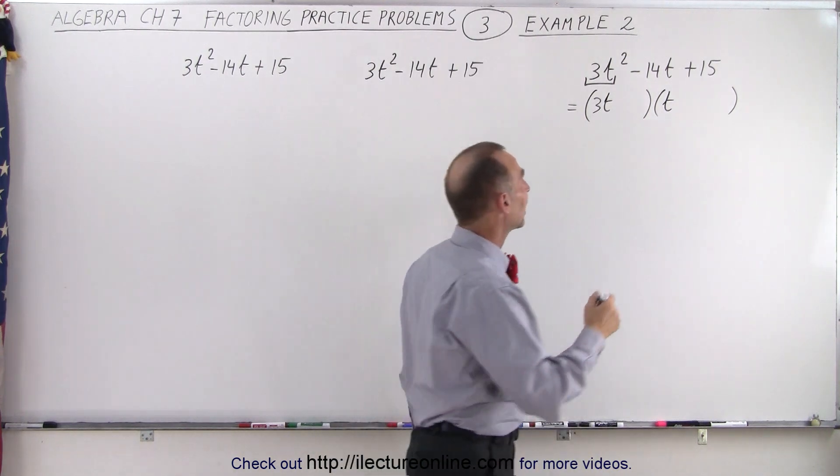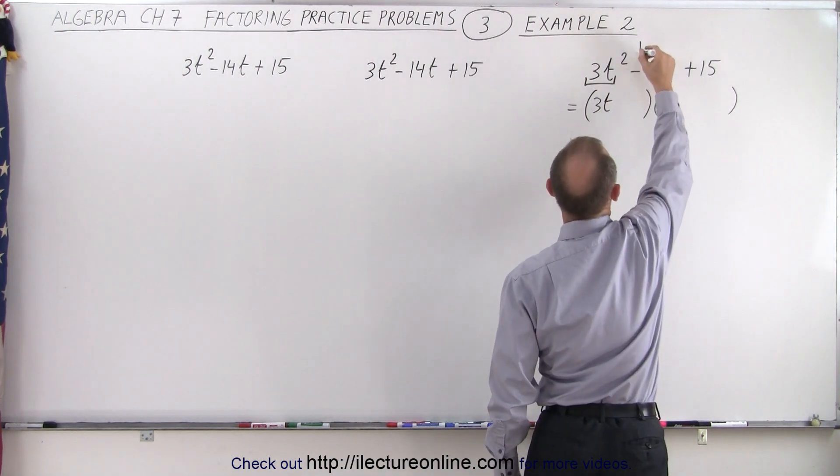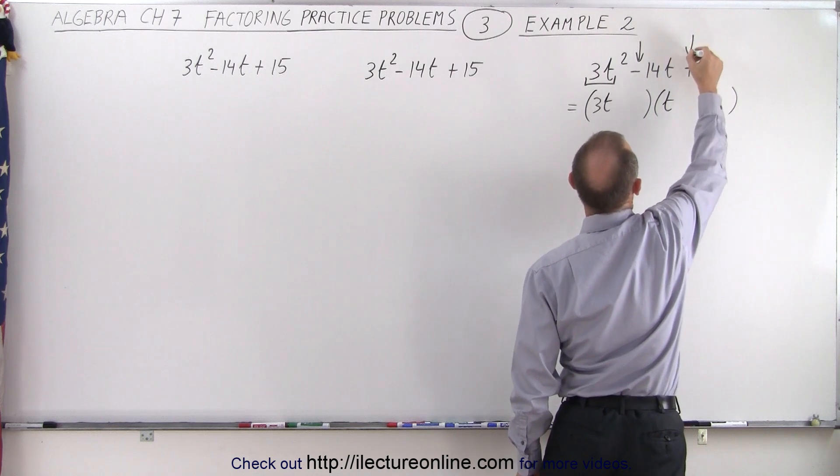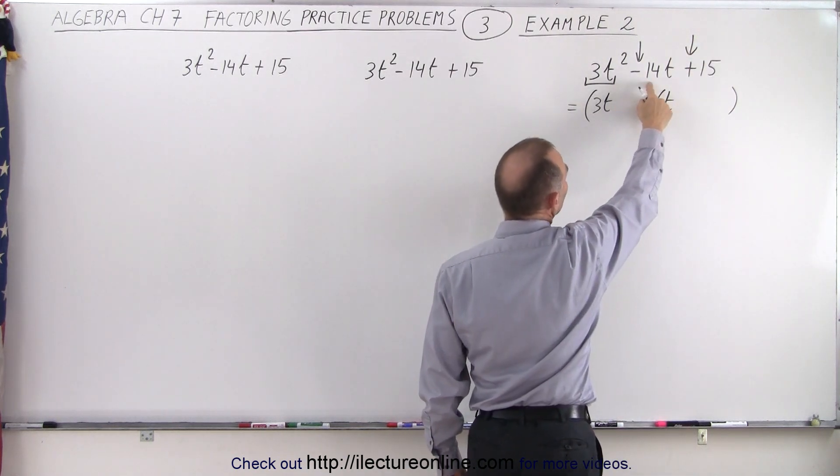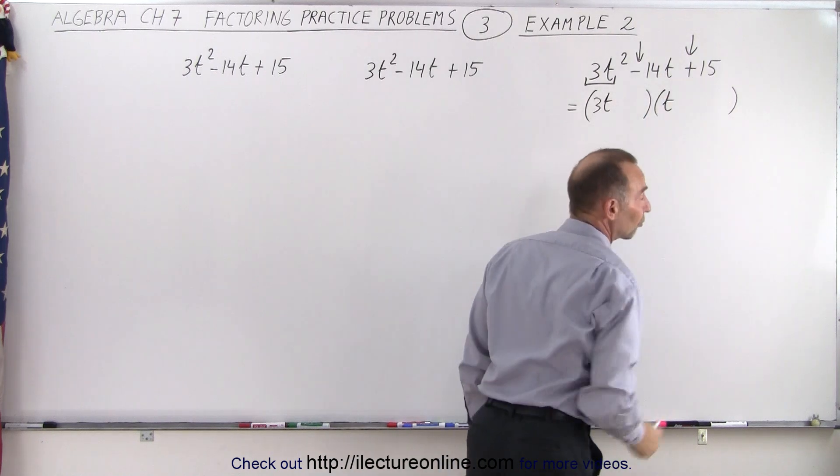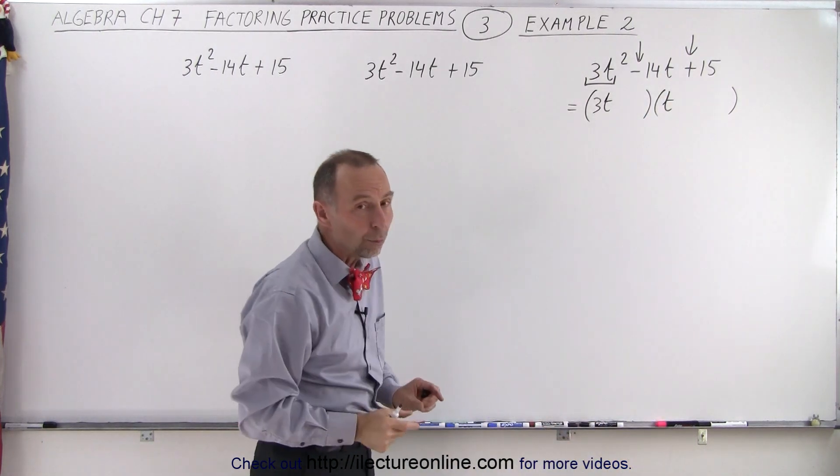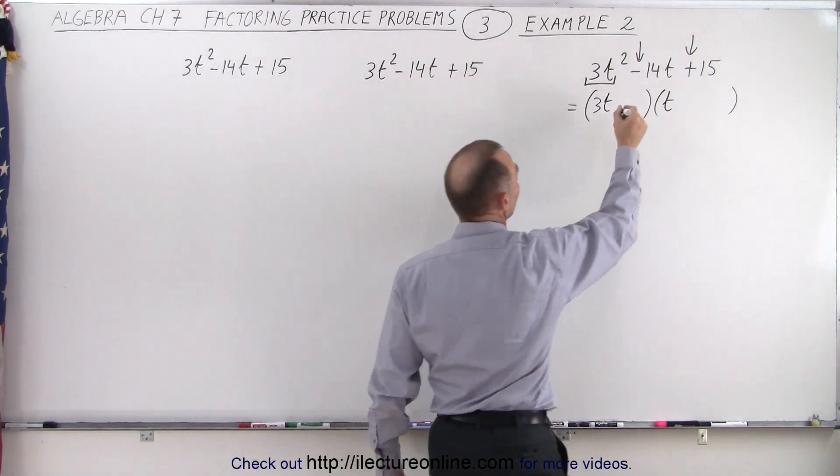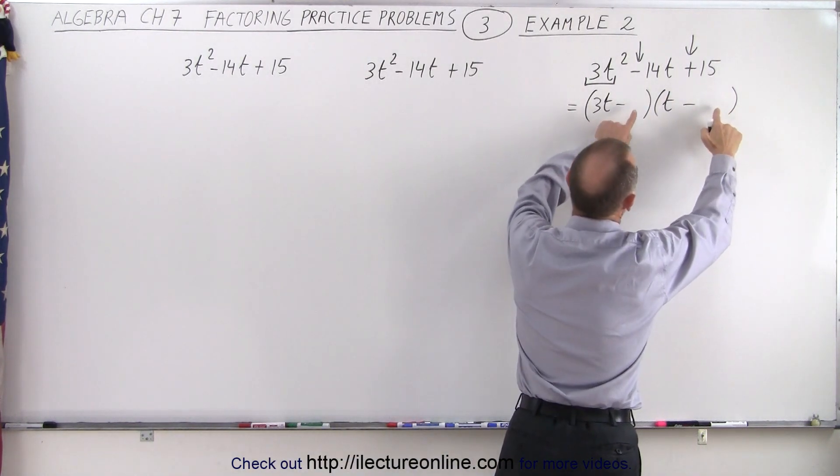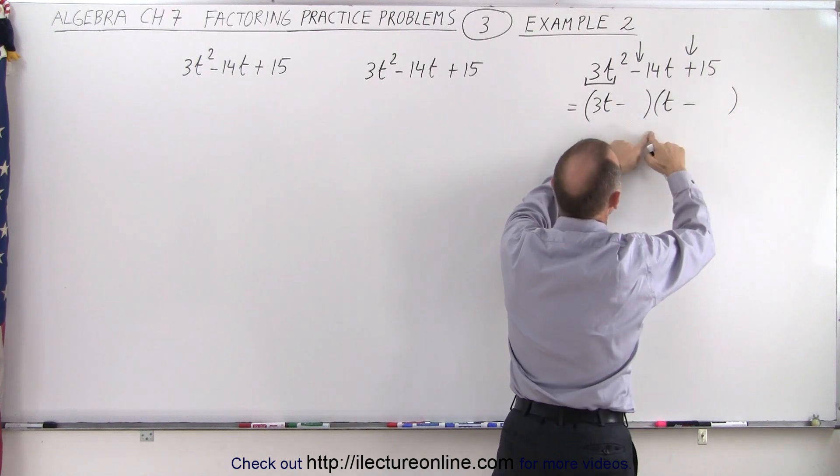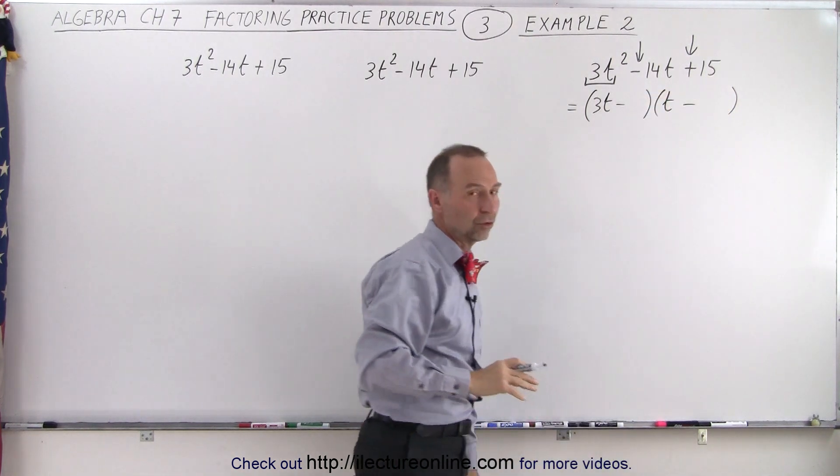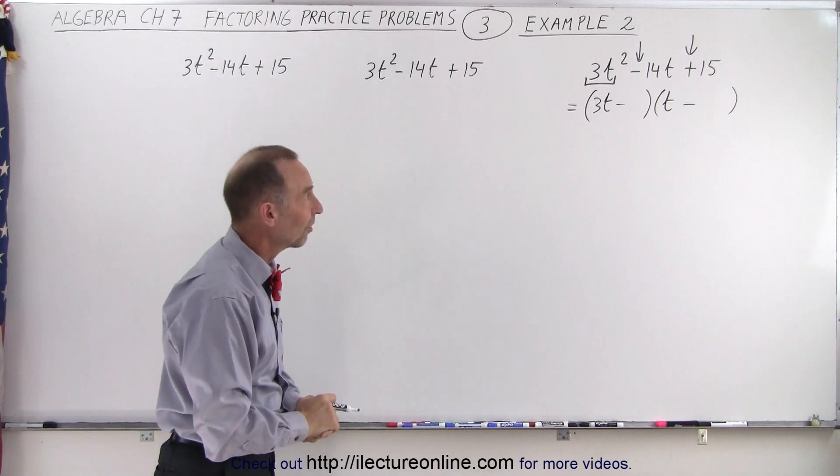Next we need to take a look at the signs. We have a negative there and a positive there. The only way to get a middle term that's negative and the last term that's positive is that the last two terms in our binomials are both negative. You can see that if we have two negative numbers multiplied together we get a positive number and added together we get a negative number. So now we know that that must be the signs.